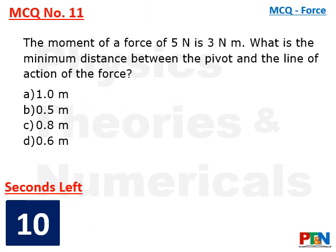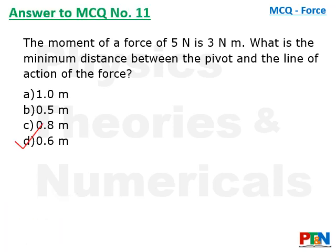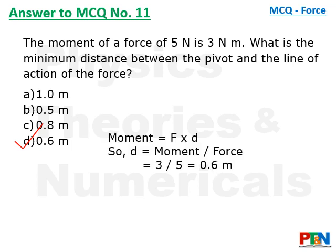Next example: the moment of a force of 5 Newton is 3 Newton meter. What is the minimum distance between the pivot and the line of action of the force? Four options, 10 seconds timer. The answer is 0.6 meter. Moment equals force into distance, so distance equals moment divided by force: 3 divided by 5 equals 0.6 meter.